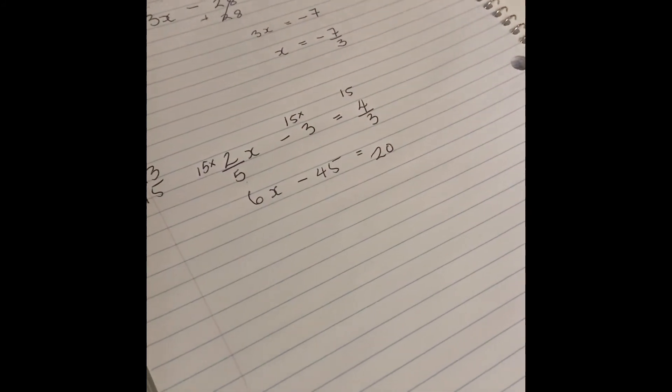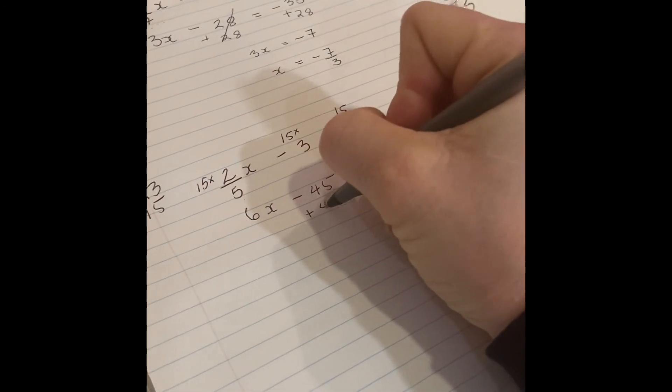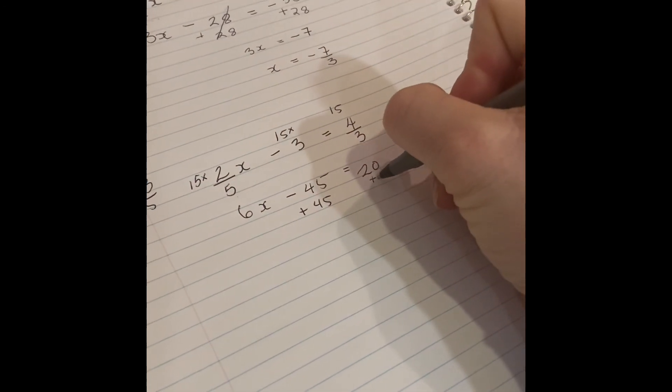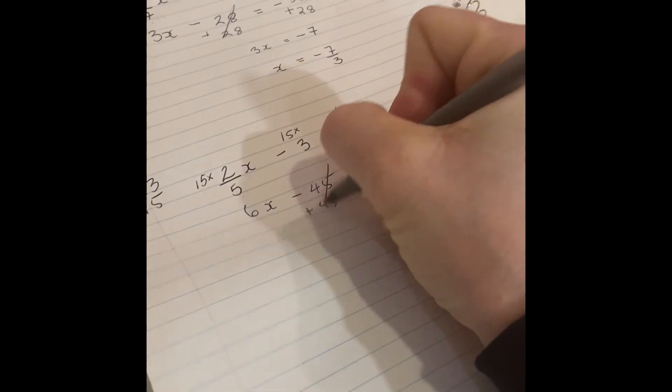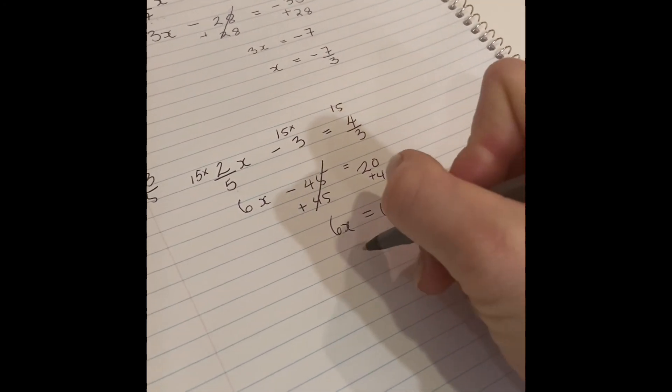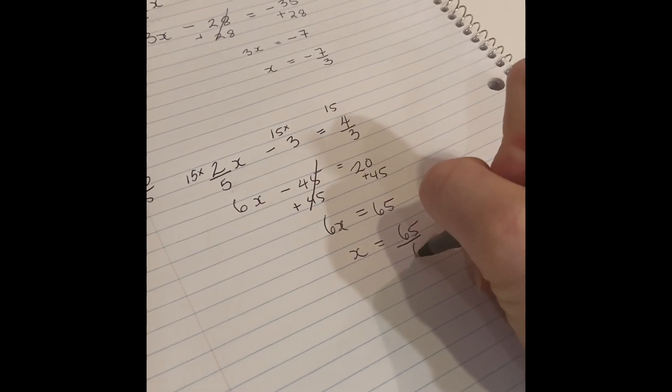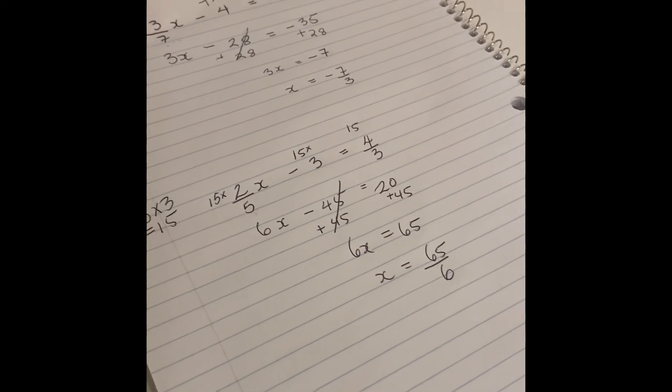I'm going to just add 45, add 45 over here and this cancels out. 6x is equal to 65, and my answer is just going to be 65 over 6. So that's the trick for when you are solving algebra questions with fractions.